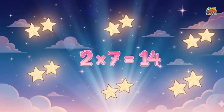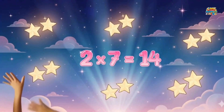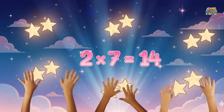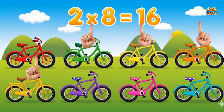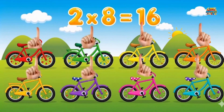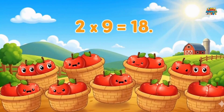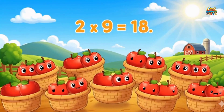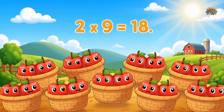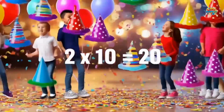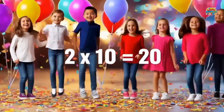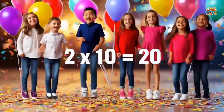Two times seven is fourteen — wave hands side to side. Two times eight is sixteen. Two times nine is eighteen — dance, clap, fast. Two times ten is twenty. Let's get a cheer and jump.